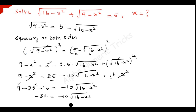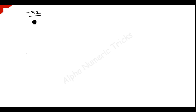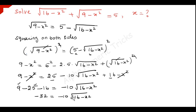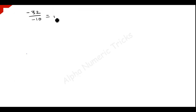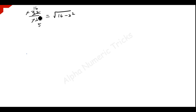So we have minus 32 is equal to minus 10 times square root of 16 minus x squared. Taking minus 10 to this side, minus 32 divided by minus 10 is equal to square root of 16 minus x squared. This minus and this minus get cancelled. Since 5 times 2 is 10 and 16 times 2 is 32, we have 16 divided by 5 is equal to square root of 16 minus x squared.